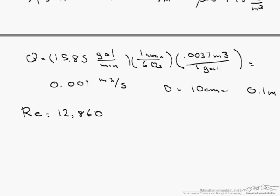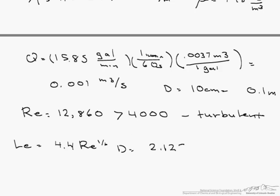So what tells us whether it is laminar or turbulent? Anything over a Reynolds number of 4,000 in a pipe is considered turbulent. Therefore, we use that the entry length is 4.4 times Reynolds to the 1 sixth times the diameter, which is 2.125 meters.